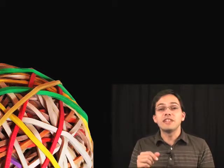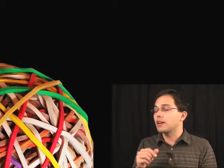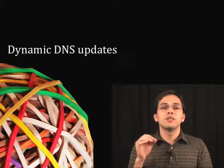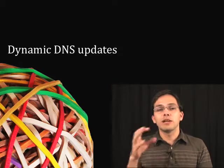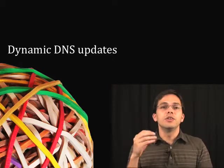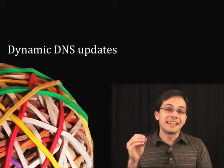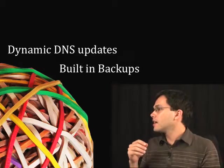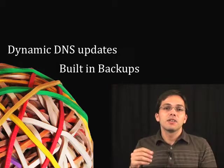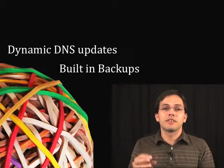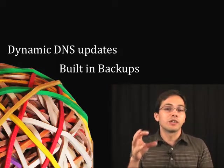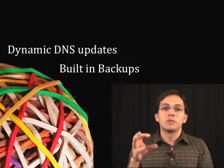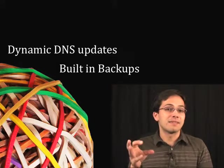There are a couple of really neat features that Rubber comes with. First of all, it has dynamic DNS updates — so if you do another deployment with new EC2 instances, you can have it automatically update your DNS to the new set of servers. It also has built-in backups. You might have seen with that MySQL configuration we looked at, it also had a crontab which schedules backups of our database.